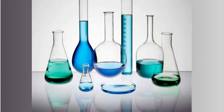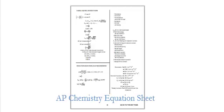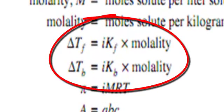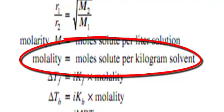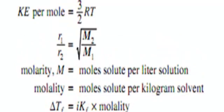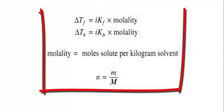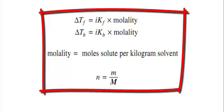Anytime we're going to be doing a freezing point depression problem, we want to take a look at our equation sheet, and more importantly we want to zero in on the gases, liquids, and solutions part of it. We're going to zero in on three different equations: delta T equals iK times molality; molality equals moles of solute per kilogram of solvent; and moles equals molar mass. These three equations are very helpful for freezing point depression or boiling point elevation problems. Take a look, write them down, and fill in what you know.